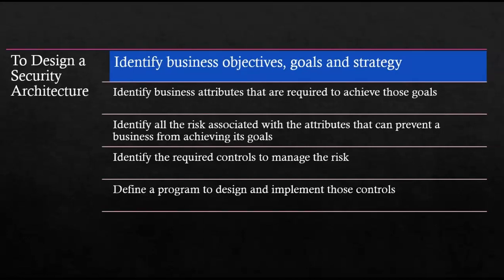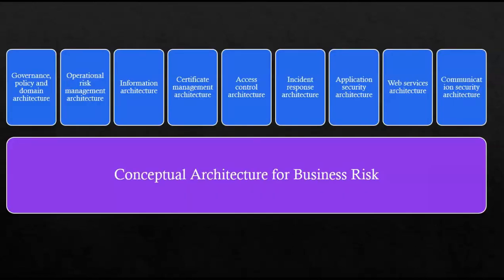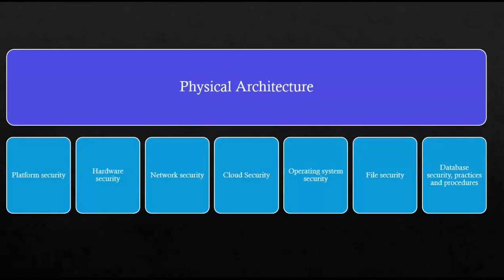After identifying risks, start identifying the required controls to manage them. Then define a program to design and implement those controls — only then can we define an architecture for business risk. This conceptual architecture of business risk will cover governance, policy, and domain architecture. It will also cover operational risk management architecture, information architecture, certificate management architecture, access control architecture, incident response architecture, application security architecture, and web service architecture, as well as communication security architecture.